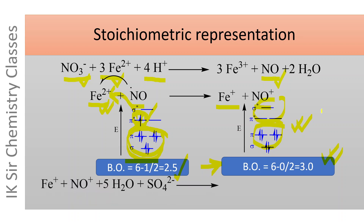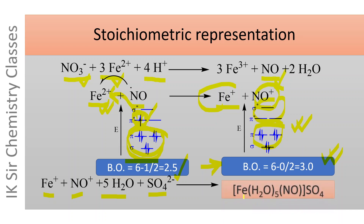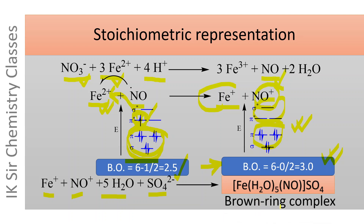Thereafter, the NO+ ion (nitrosonium ion) combines with Fe+ ion, H2O molecules, and sulfate ion, forming [Fe(H2O)5(NO)]SO4, which is the brown ring complex.